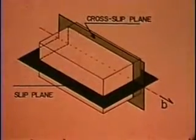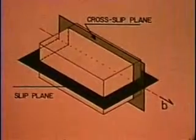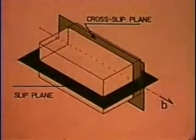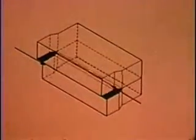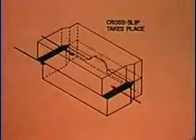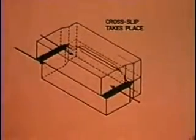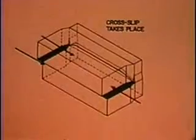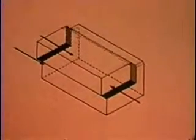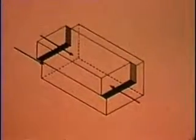The intersection of the cross-slip and primary planes must be parallel to both the dislocation and its Burgers vector, so only screw dislocations cross-glide. In addition to stress on the cross-glide plane, thermal activation is needed to start the constriction. A more extended dislocation needs greater activation energy.